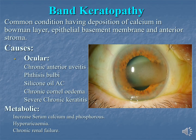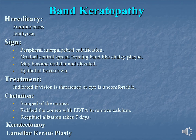Band keratopathy is a common condition with deposition of calcium in Bowman's layer, epithelial basement membrane, and anterior stroma. Causes may be ocular or metabolic. Ocular causes include chronic anterior uveitis, phthisis bulbi, silicone oil in the anterior chamber, chronic corneal edema due to any cause, and severe chronic keratitis. Metabolic causes include increased serum calcium and phosphorus levels, hyperuricemia, and chronic renal failure. It may also be hereditary in familial cases.